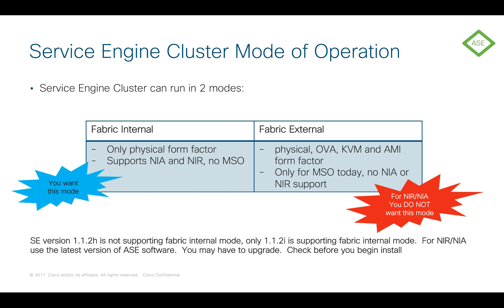You can deploy this physical cluster in two modes of operation: one called Fabric Internal, and the other called Fabric External. Because we're talking about deploying Network Insights here, the mode you want will always be Fabric Internal, at least at the recording of this video, so that's the one we're going to focus on. Also, when you order this Application Services Engine cluster, it might come with an older version of software. You need to be running version 1.1.2i or later to support Network Insights on Fabric Internal mode, so you might need to upgrade.